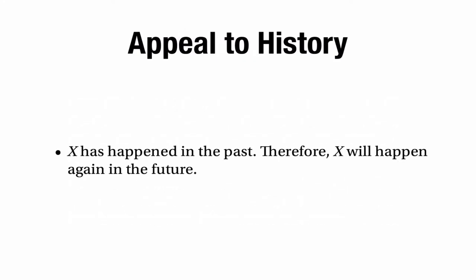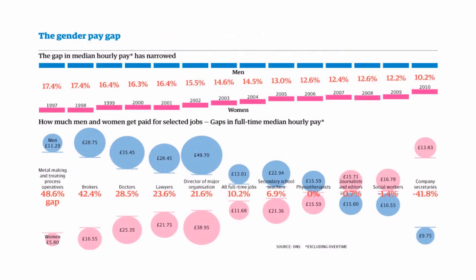Let's move on to our next type of appeal: the appeal to history. This says X has happened in the past, therefore X will happen again in the future. For example, an argument of this type might note that the gap between the pay of men and women has been going down considerably — in 1997 the gap was 17.4%, but in 2010 it was only 10.2%. So in the past the gap between the pay of men and women has decreased. Somebody might argue it's clear that it will continue to decrease, and eventually men and women will be paid the same amount.